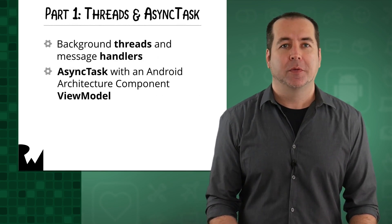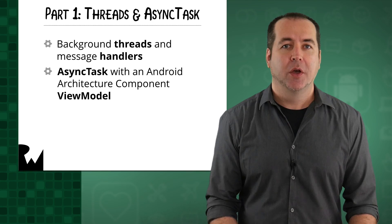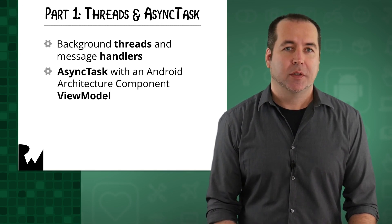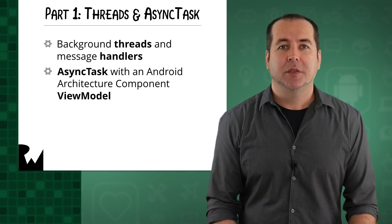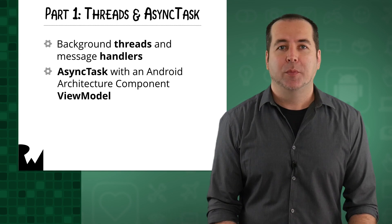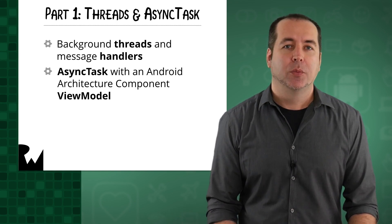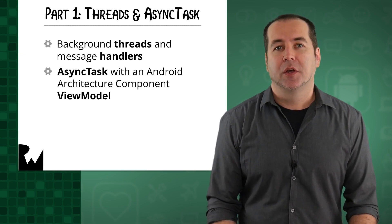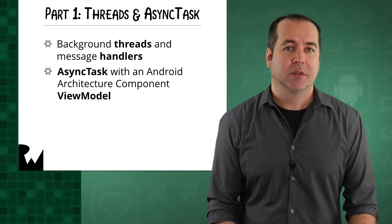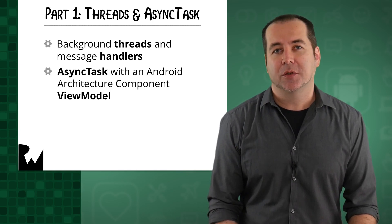In part one, we'll start at the more fundamental level of multi-threading with the Thread class. Every app starts with a thread called the MainThread. Using the Thread class, you create new threads of execution manually, and you need to find some means of communicating back to the app MainThread. Part one will then move on to using the AsyncTask class, which was an early way on Android to perform computation on a separate thread. Use of AsyncTask has been discouraged due to issues that arise with the Android lifecycle, but recent developments in the Android ecosystem have made such issues easier to avoid.